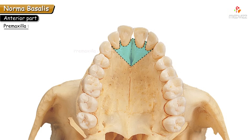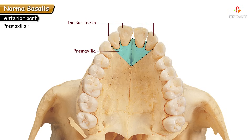The premaxilla is a triangular piece of the maxilla holding the four incisive teeth. In other vertebrates it is present as a separate bone, but in humans it is part of the maxilla. This concludes the anterior part of norma basalis.